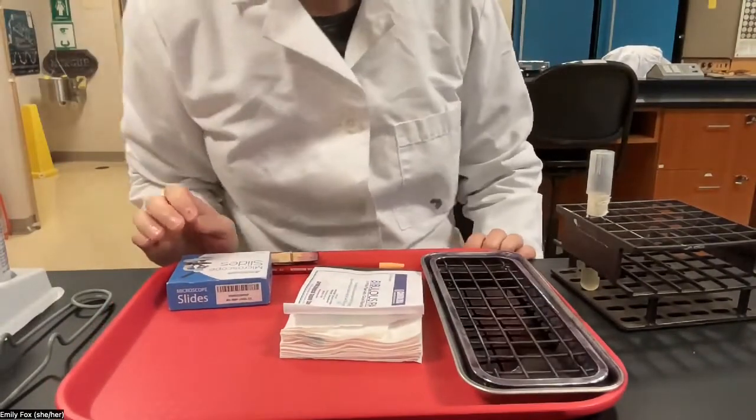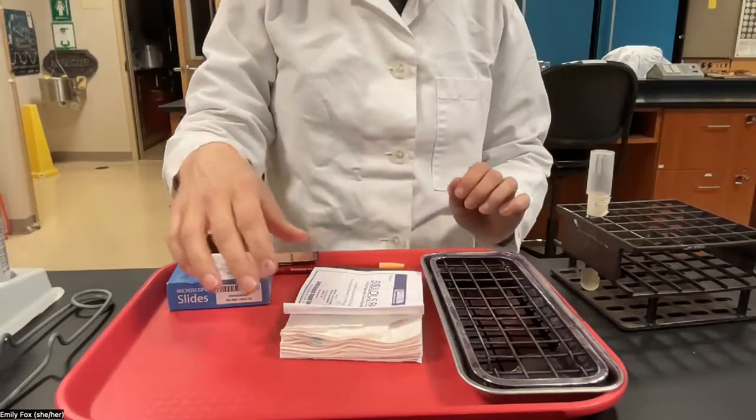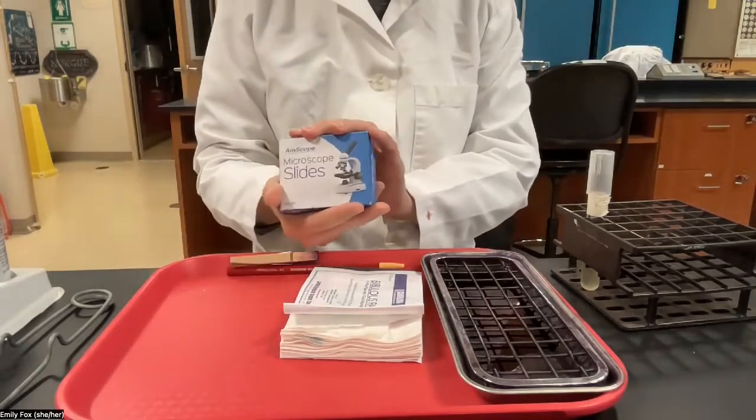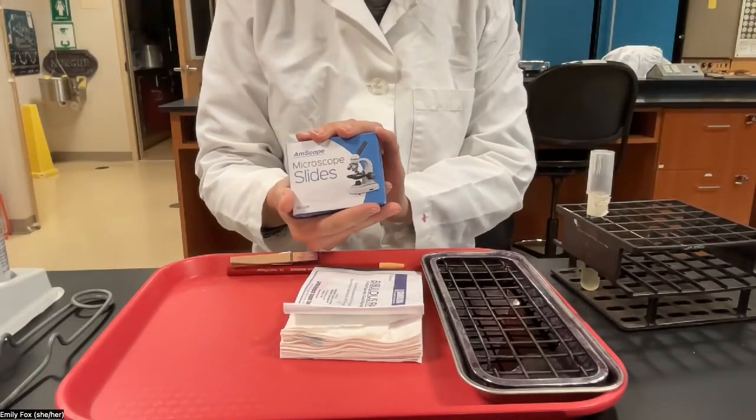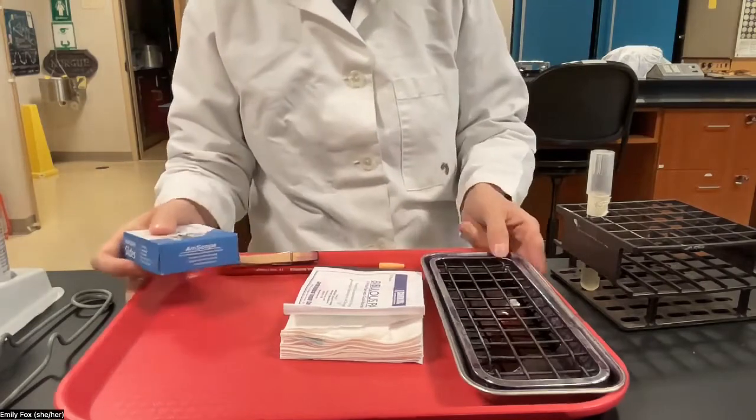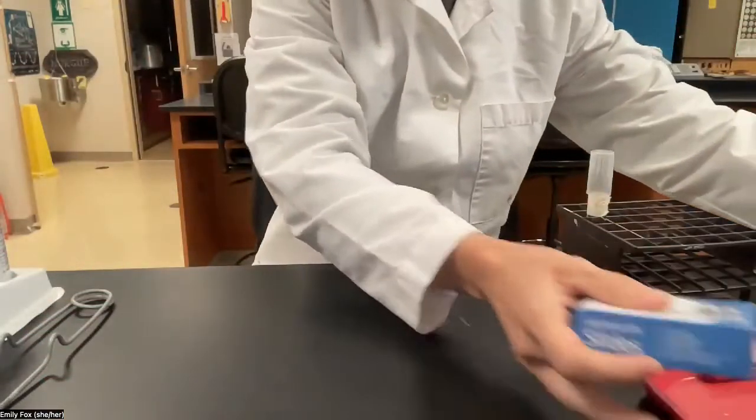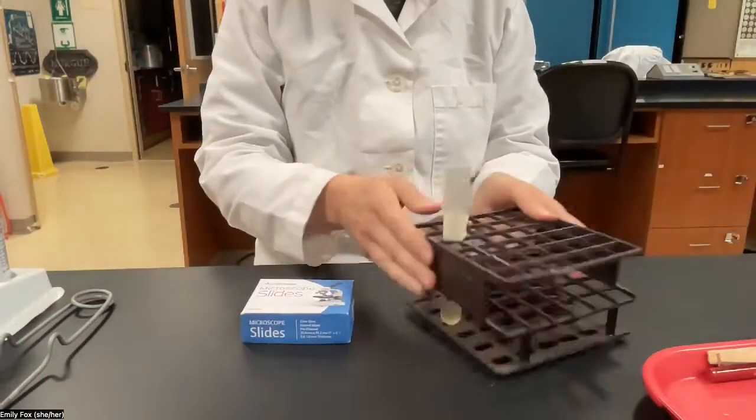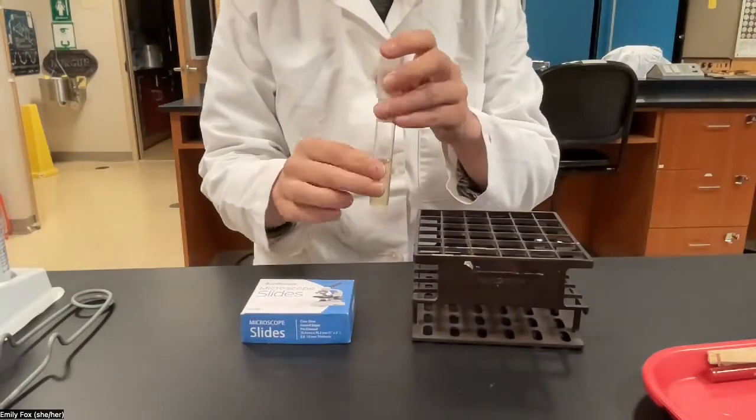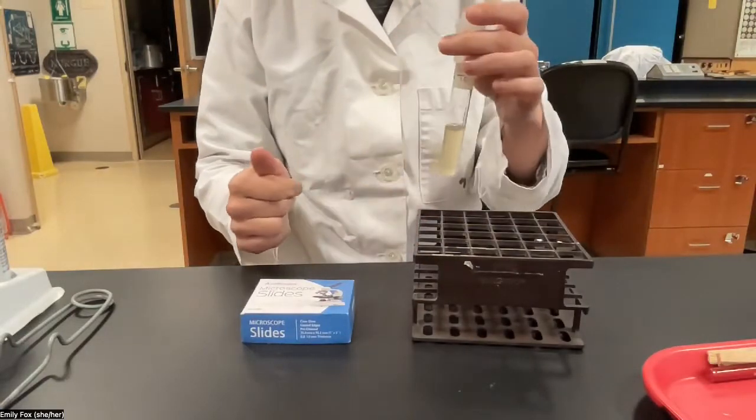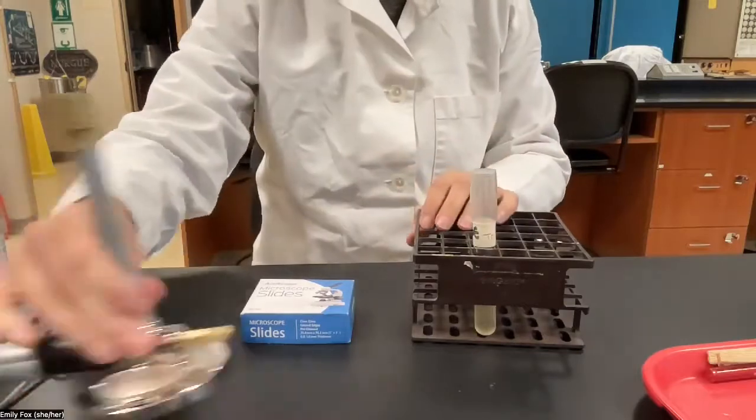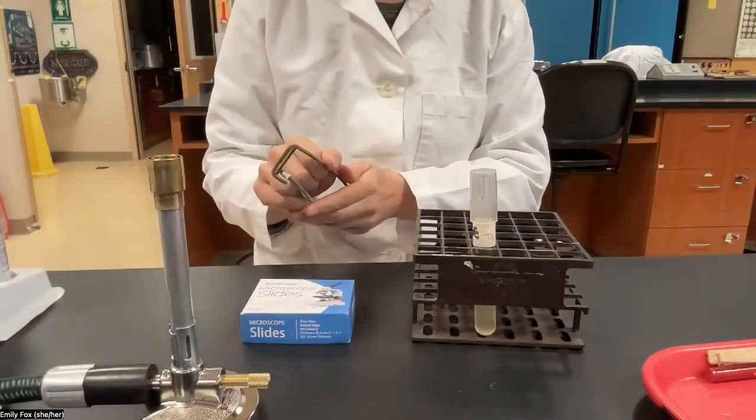These are the materials that you'll need for the Gram stain. The lead slides to put your bacteria on. Let's start with that part. Slides, a tube of broth culture with bacteria, a Bunsen burner, and a striker.